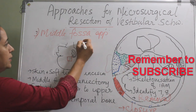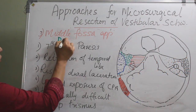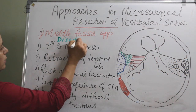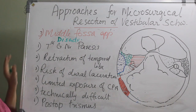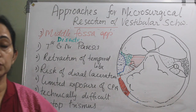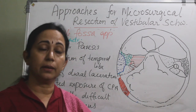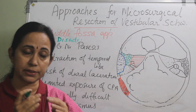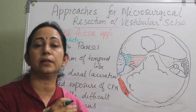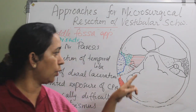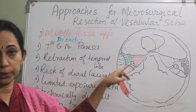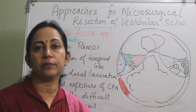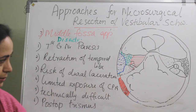There are also some disadvantages of the middle fossa approach. The first is 7th cranial nerve paresis, though temporary, because the facial nerve crosses the anterior superior portion of the tumour in most cases, so there is a chance of temporary facial nerve paresis.